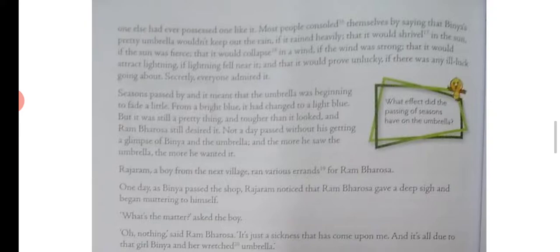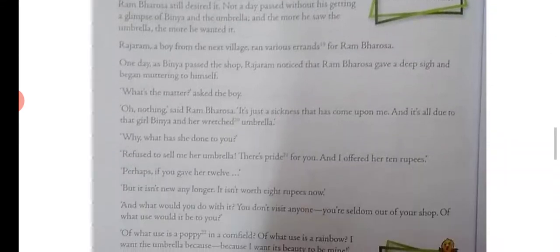One day when Binya passed by the shop, Raja Ram noticed that Ram Bharosa gave a deep sigh and began muttering to himself. 'What's the matter?' asked the boy. 'Oh, nothing,' said Ram Bharosa. 'It's just a sickness that has come upon me — and it's all because of that girl and her blue umbrella.'